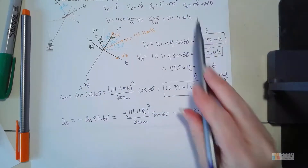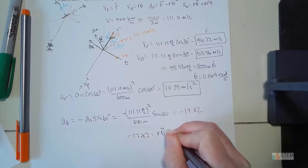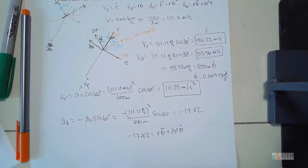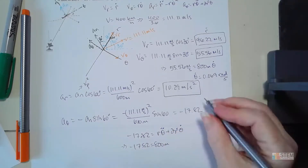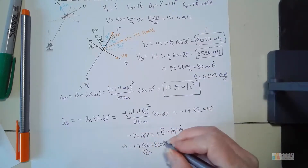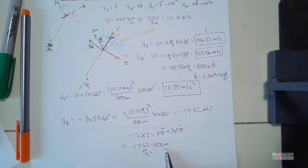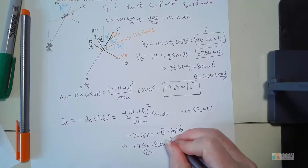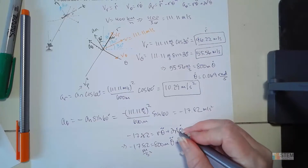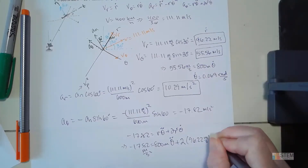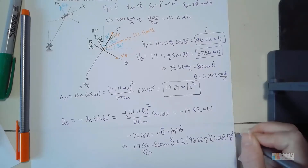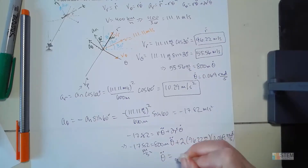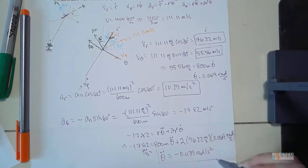Setting that equal to the expression aθ = r·θ̈ + 2·ṙ·θ̇, we plug in our known values: −17.82 = 800·θ̈ + 2·(96.22)·(0.069). One unknown, one equation — solving gives θ̈ = −0.039 radians per second squared.